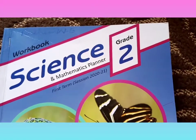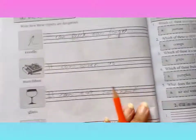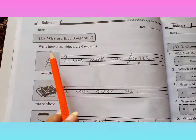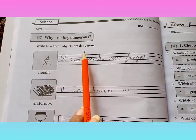Welcome students. So now open your science verbals. Stage number 16. You can see that pictures. Write how these objects are dangerous.